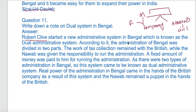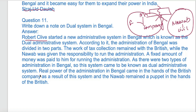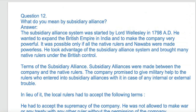According to it, the administration of Bengal was divided into two parts. The work of tax collection remained with the British, while the Nawab was given responsibility to run the civil administration. A fixed amount of money was paid to him for running the administration. As there were two types of administration in Bengal, it was called the dual administrative system. The real power of administration came into the hands of the British company, and the Nawab remained a puppet in the hands of the British.